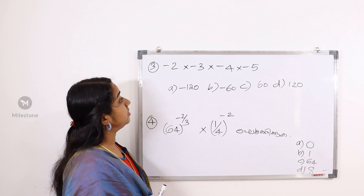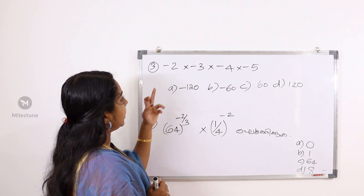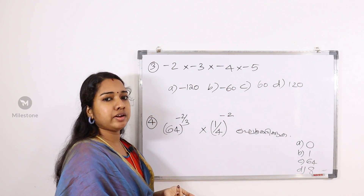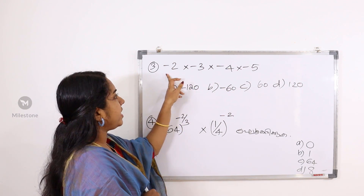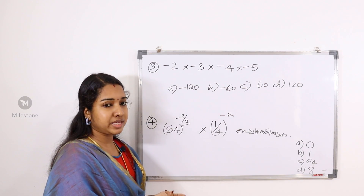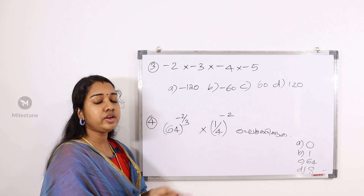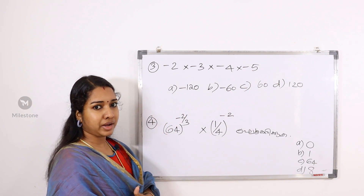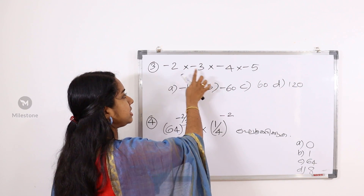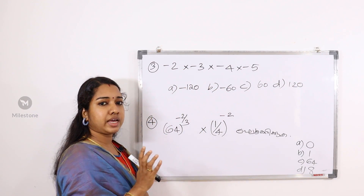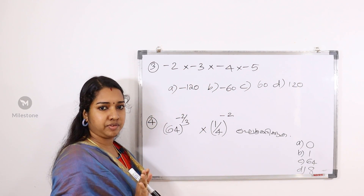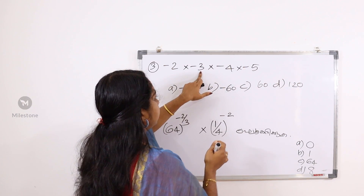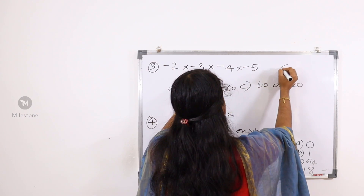Next question: minus 2 into minus 3 into minus 4 into minus 5. I will multiply the numbers with negative numbers. In the basic video, the operation of negative numbers is covered. If you have two negative numbers, the answer is positive. Minus 2 into minus 3 equals 6.